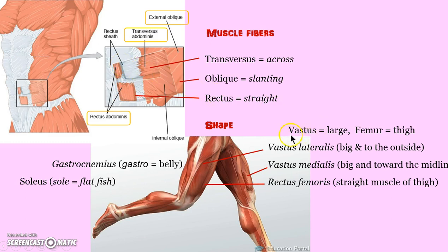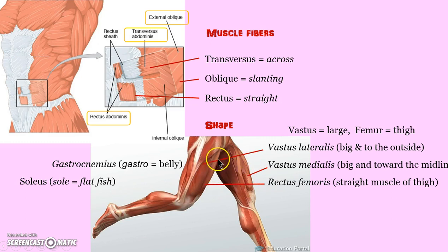Shape. It helps to know key words like vastus, meaning large, and femur, meaning thigh. Vastus lateralis is the big thigh muscle to the outside, and medialis is the thigh muscle to the inside. And rectus — straight down the middle. Gastro refers to the gastroc — think of belly, the calf muscle. And the soleus sits underneath the gastroc.